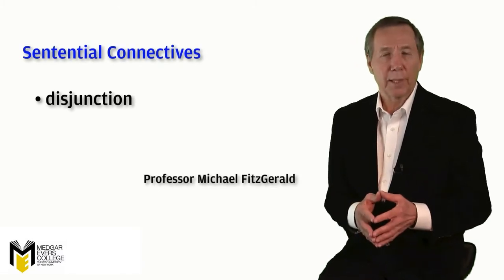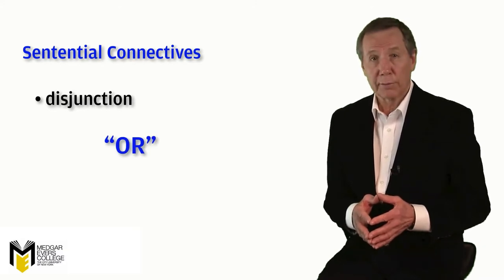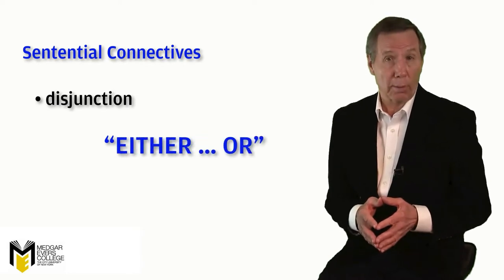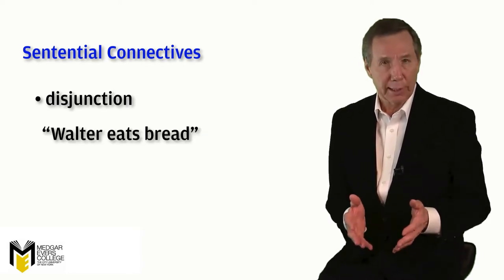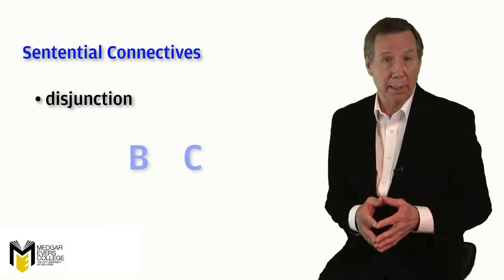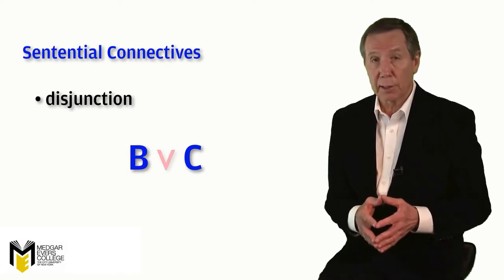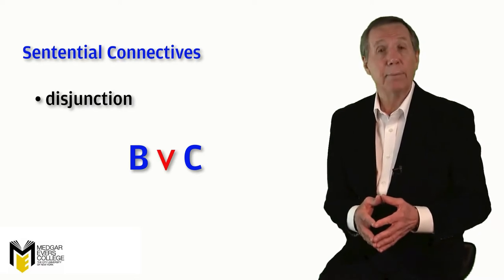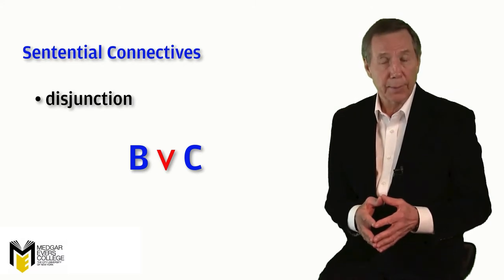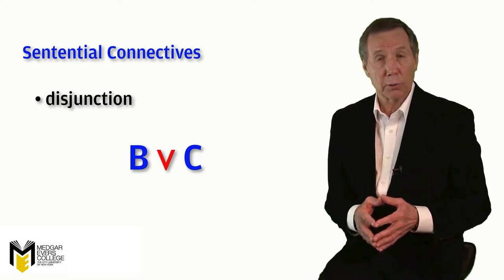Now let's take a look at disjunction. When we disjoin two atomic sentences, we bring them together with the word 'or,' or one of several words that have the same force, such as 'unless' and 'either...or.' Suppose we wanted to disjoin 'Walter eats bread' with 'Charles reads books.' We've already symbolized these two atomic sentences with B and C respectively, so if we want to disjoin them we simply insert the symbol for disjunction — the wedge or V — between the two disjuncts, and we get B wedge C, which we can read as 'either Walter eats bread or Charles reads books.'